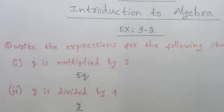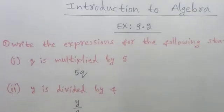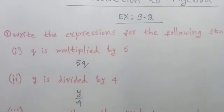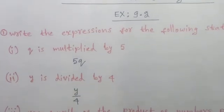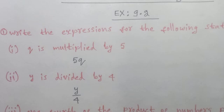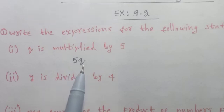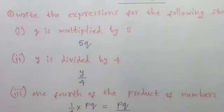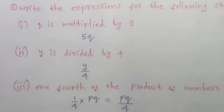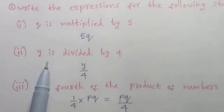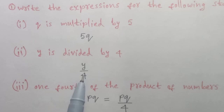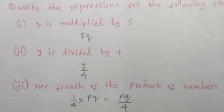First one: Q is multiplied by 5, that is 5 times that of Q — 5 into Q. That is the first answer. Next, Y is divided by 4. The answer is Y divided by 4.